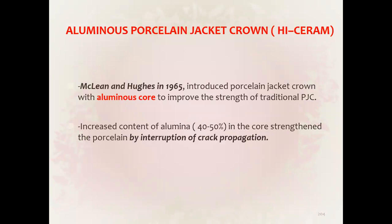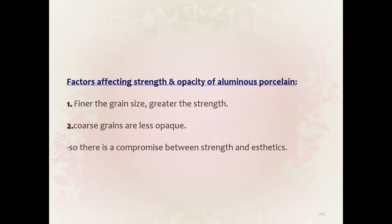Aluminous porcelain jacket crown — Hi-Ceram — was introduced by McLean. Alumina content is increased to improve the strength of traditional porcelain jacket crowns, and the increased content helps in impeding crack propagation. Factors affecting strength and opacity: finer grain size gives greater strength; coarse grains are less opaque, so there is a compromise between strength and aesthetics.